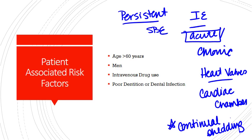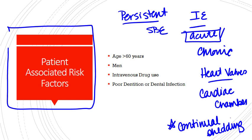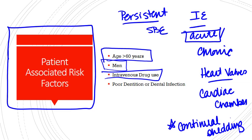There are several risk factors associated with infective endocarditis. The first are patient-associated risk factors — things that the patient just kind of is or does that predisposes them to developing IE. These include patients over the age of 60, who are always in a higher risk category, and men, who are at inherently higher risk for infective endocarditis.